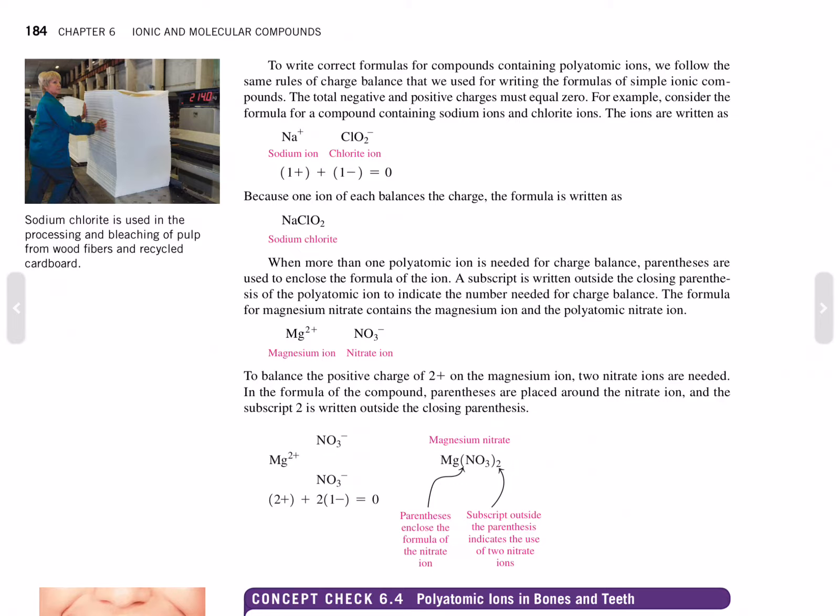To write correct formulas for compounds containing polyatomic ions, we follow the same rules of charge balance that we use for writing formulas of simple ionic compounds. The total negative and positive charges must equal zero. For example, consider the formula for the compound containing sodium ions and chlorite ions. The ions are written as Na^+ and ClO2^-. Positive 1 and negative 1 equals 0. Because one ion each balances the charge, the formula is written as NaClO2, sodium chlorite.